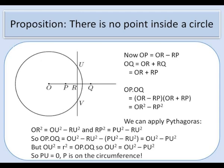So that's the setup and what we're now going to look at is that OP = OR - RP. I think that's clear. And OQ = OR + RQ and RQ and RP are the same so that's OR + RP. So when we multiply these two OP × OQ is the difference between two squares OR² - RP².